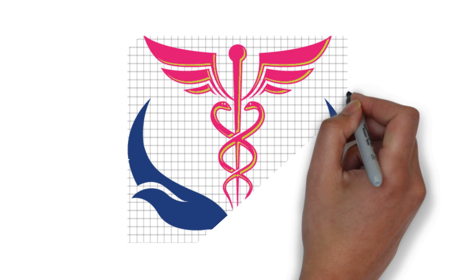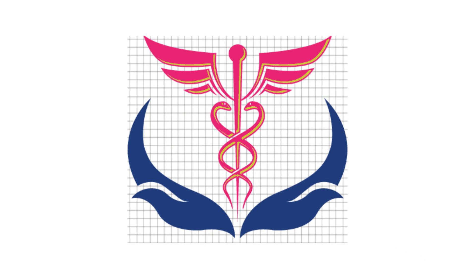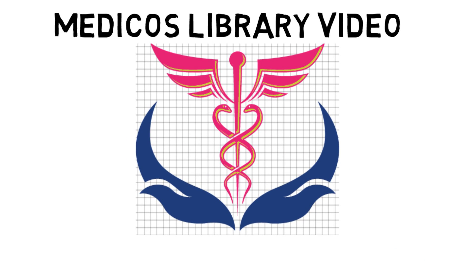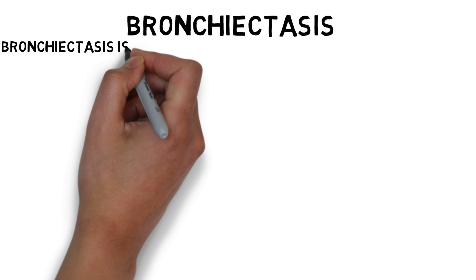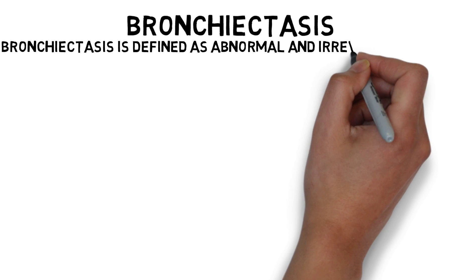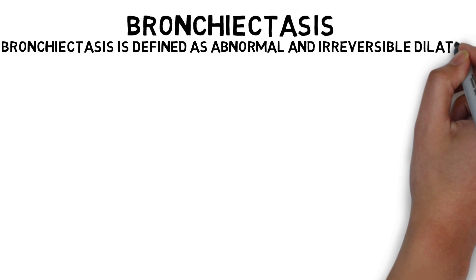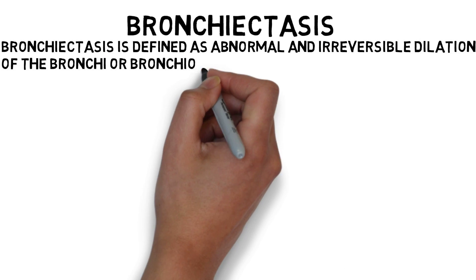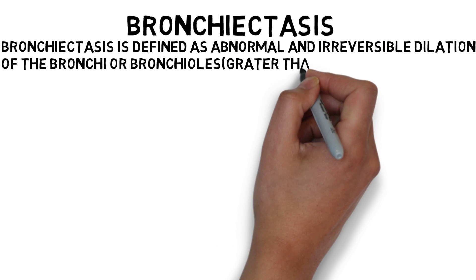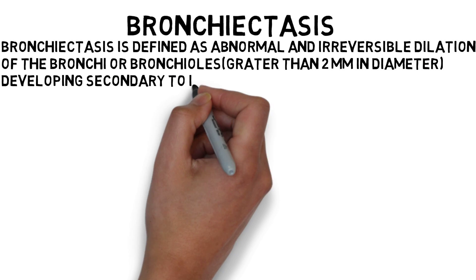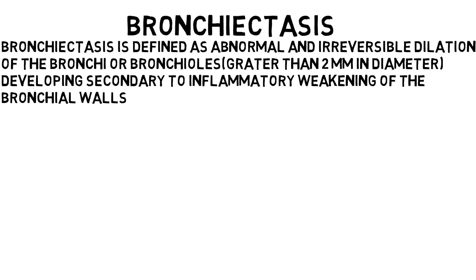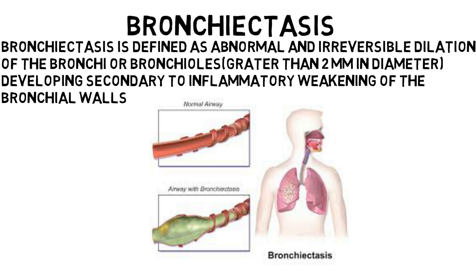Hello guys, this is a medical library video for you. Topic is Bronchiectasis. Bronchiectasis is defined as abnormal and irreversible dilation of the bronchi or bronchioles, greater than 2 mm in diameter, developing secondary to inflammatory weakening of the bronchial wall.